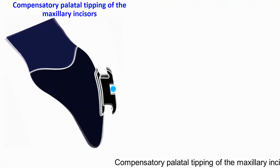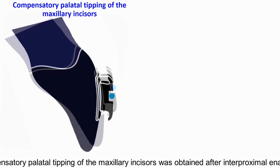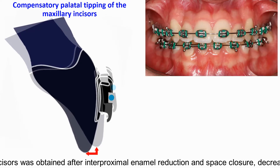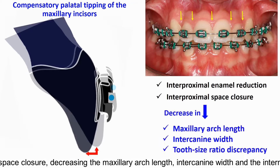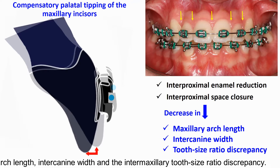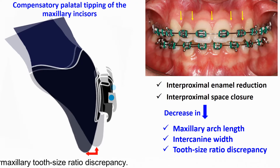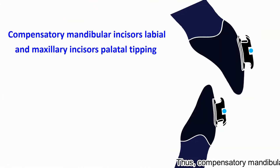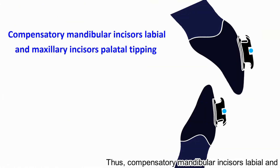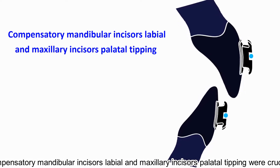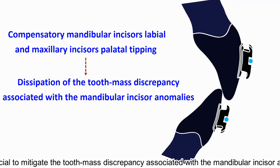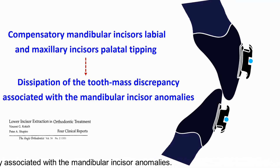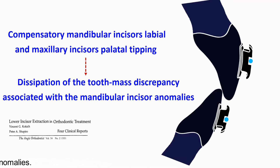Compensatory palatal tipping of the maxillary incisors was obtained after interproximal enamel reduction and space closure, decreasing the maxillary arch length, intercanine width, and the intermaxillary tooth size ratio discrepancy. Thus, compensatory mandibular incisor labial tipping and maxillary incisor palatal tipping were crucial to mitigate the tooth mass discrepancies associated with the mandibular incisor anomalies.